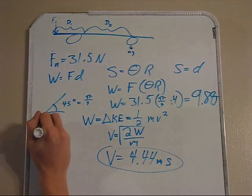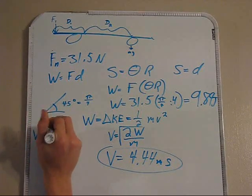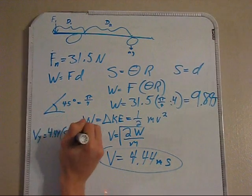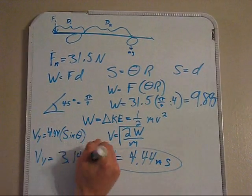To get this velocity, we use the angle, which is 45 degrees, as shown in this picture, to find the velocity in the y direction to determine the total height.